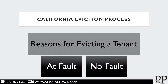The California eviction process can be broken down into two different categories. You have to decide why are you evicting the tenant. You're either evicting the tenant because the tenant's at fault or not at fault. An at-fault tenant eviction is when you're evicting the tenant because of something that they are doing that they're not supposed to be doing. For example, the tenant is allowing a pet to be at the property when the lease says no pets, or the tenant is smoking at the property against a no-smoking policy in the lease. These are examples of an at-fault eviction.